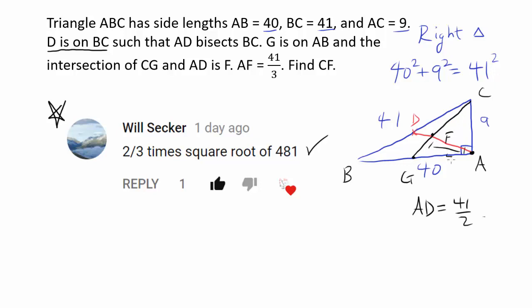And we know AF is 41 over 3. And realize 41 over 3 is equal to 2 thirds of AD. If you have 41 over 2 multiplied by 2 thirds, you get 41 over 3. And that's telling you AF and FD are in ratio 2 to 1. Because AF is 2 thirds of the entire thing, FD has to be 1 third of the entire thing.